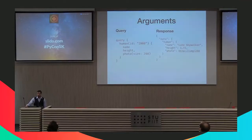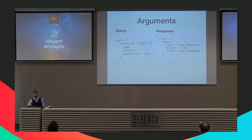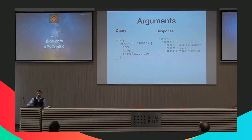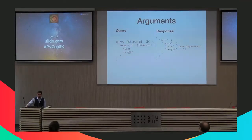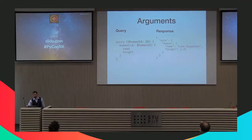We can also pass arguments to each field. Arguments are used for anything from pagination and filtering, to specifying the size of images. Here, we pass an argument to the human query — like calling a GET request for an object detail. We can also pass an argument to a photo field to get the image in the requested size. All arguments are named, not positional, which makes the API more flexible when adding more arguments. We can define arguments for the root query and make queries more general, passing variables and fetching different data from the server.